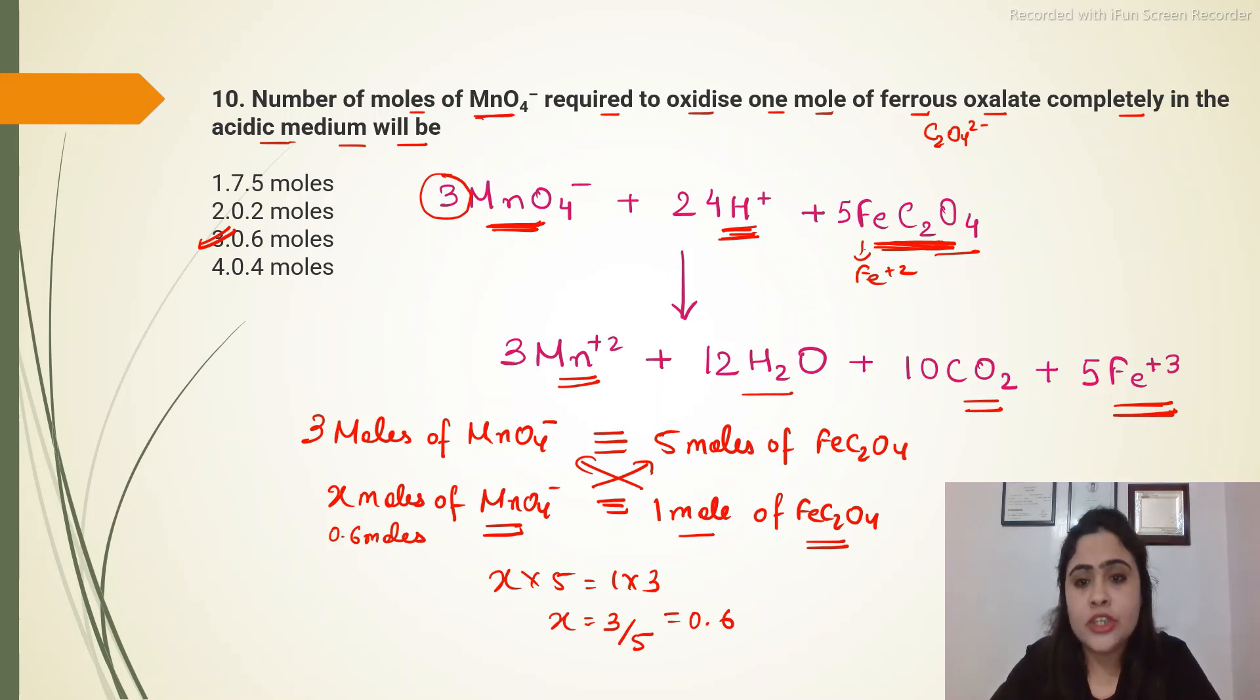Now you can balance the equation by hit and trial method, and I also explain you how to balance the redox reactions through ion electron method and oxidation number method in my next lecture.